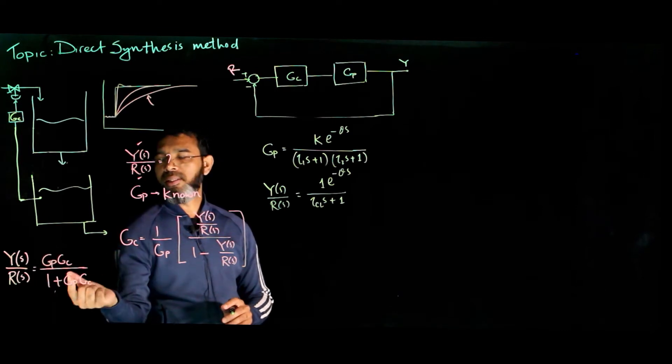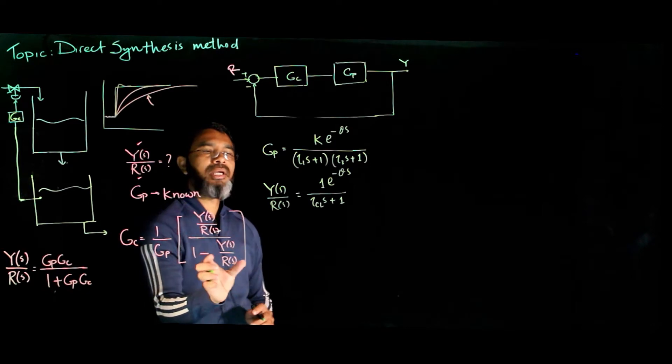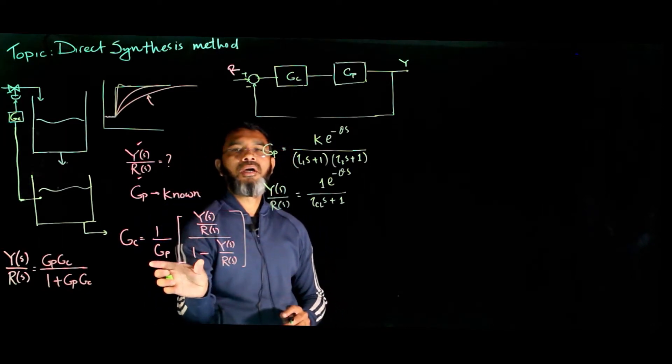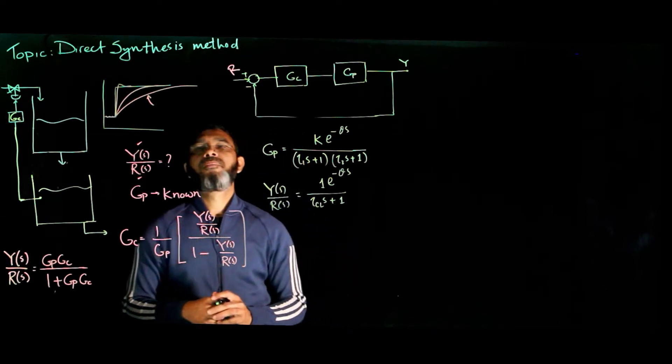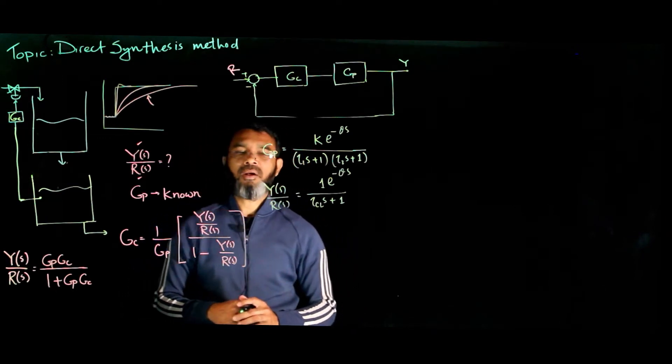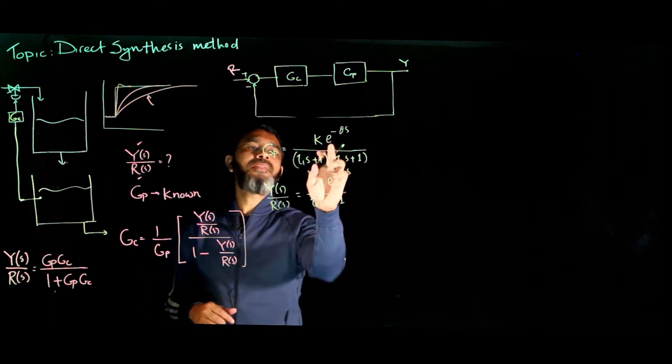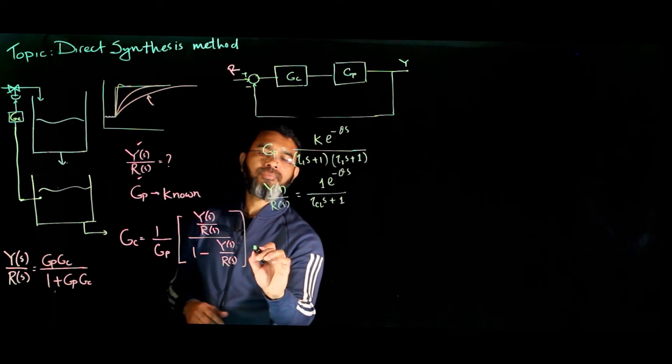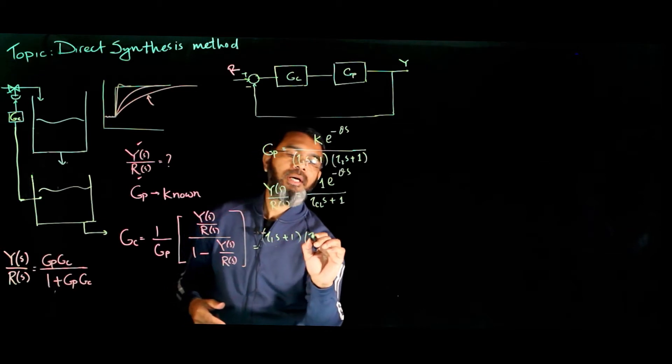This expression does not depend on the order of the process or the order of the desired closed-loop response, so this remains the same. So if you simply plug in this equation, we'll end up getting tau 1 s plus 1, tau 2 s plus 1, over k e to the negative theta s.